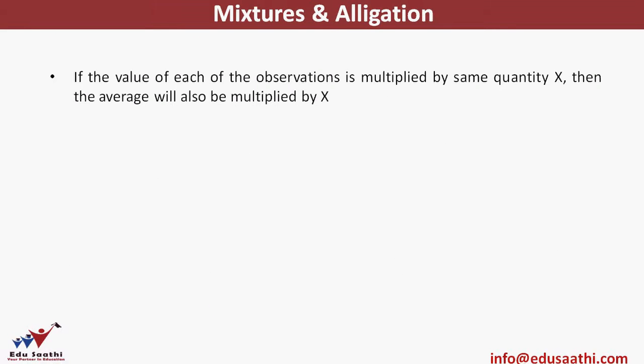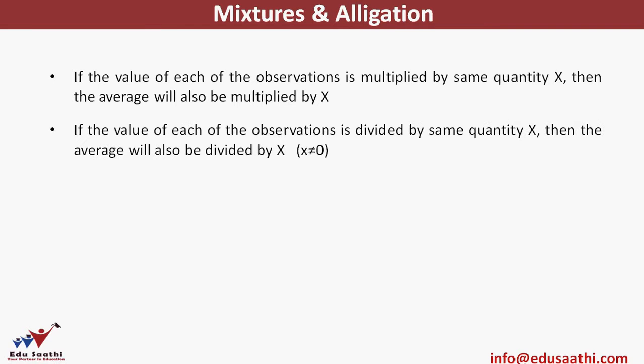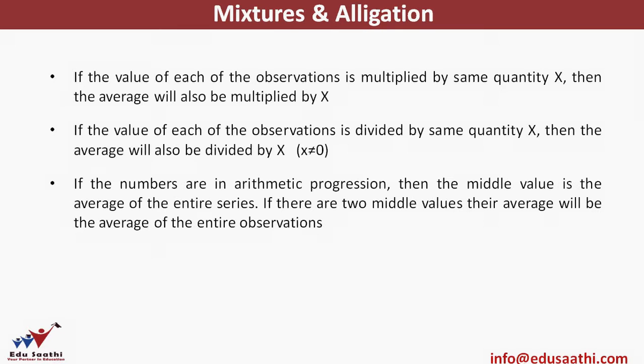If each observation is multiplied by the same quantity x, the average will also be multiplied by x. So if your initial average is 20 and all values are multiplied by 5, the average also becomes 5 times the original — the new average will be 5 × 20 = 100. Similarly, if each observation is divided by the same quantity, the average will also be divided.